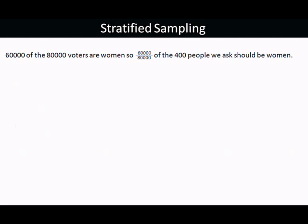60,000 of the 80,000 voters are women, so in fairness 60,000/80,000 of the 400 people we ask should be women. So 60,000/80,000 of 400 — that's 60,000 on top, 80,000 on the bottom for that fraction. 'Of' means times, so we've got a times sign there, and then times 400. The 400 goes on the top when we multiply a fraction by a number, and that gives us 300 women.